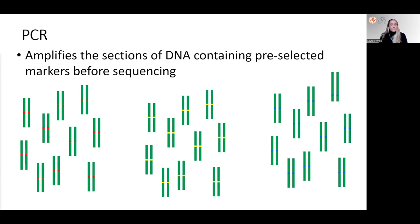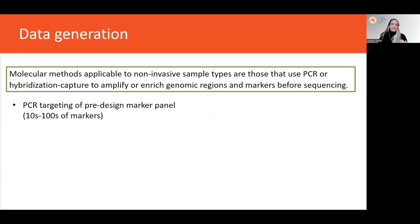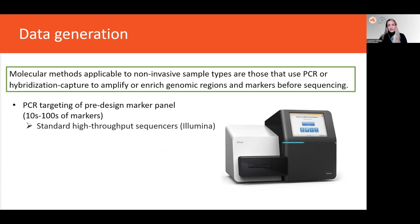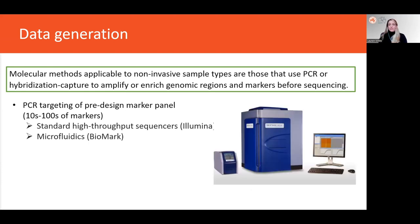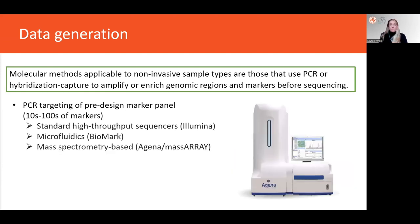So after amplification we can prepare the DNA for sequencing on say a standard high throughput platform like Illumina, or researchers may choose to use other platforms that combine PCR and the sequencing step, for example microfluidics from Biomark or mass spec based platforms such as MassArray.